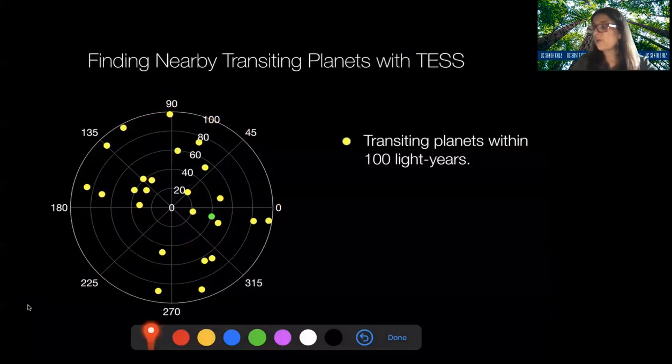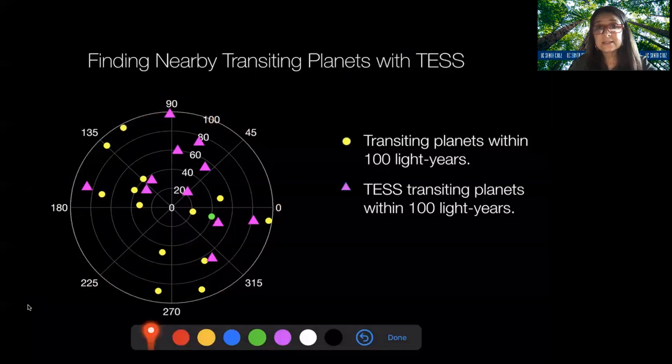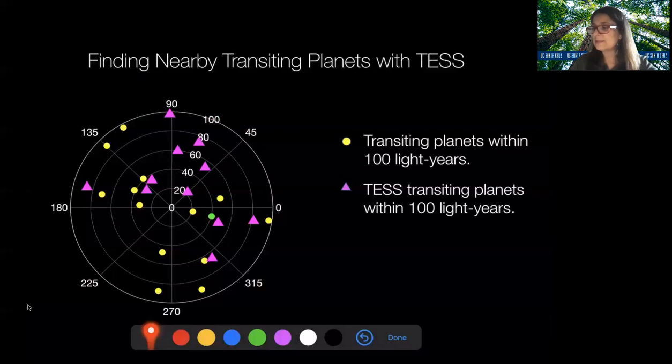And TESS has contributed now about a half of them. In just its less than two years of operation, TESS has already discovered multiple planets, many planets orbiting stars within 100 light years that can be subjected to atmospheric characterization, which is very exciting. I think that the next decades of exoplanet science are going to be really characterized by atmospheric studies, giving us another window into the diversity of exoplanets.